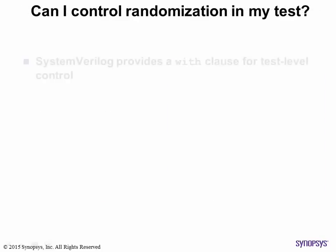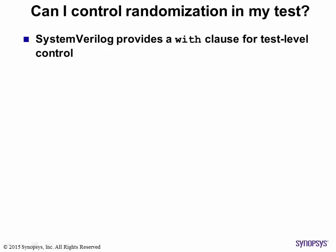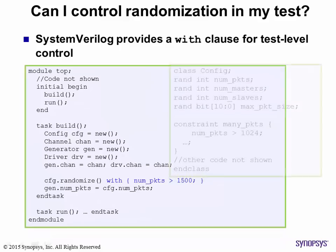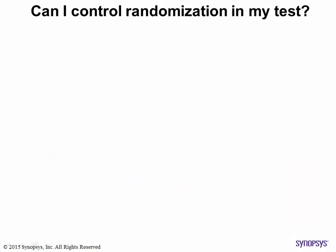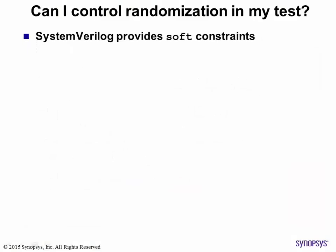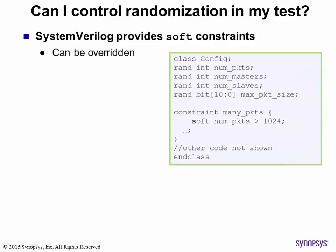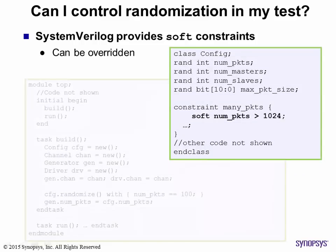You do not need to edit the class to change the constraints. Using the with clause, you can create different tests as needed. The with clause allows you to add constraints inline when the randomize function is called. While the with clause is very powerful, it cannot override the constraints defined in the class. Using soft constraints allows you to override the class constraints.